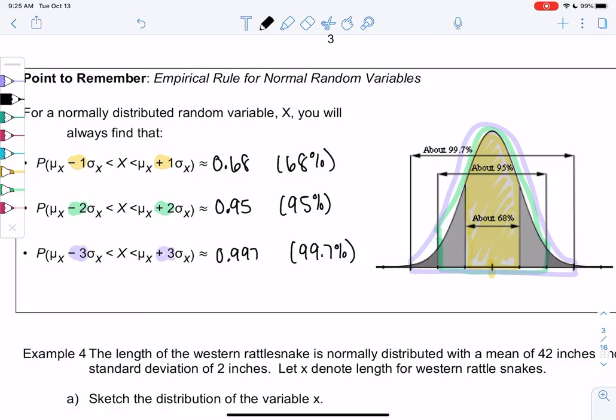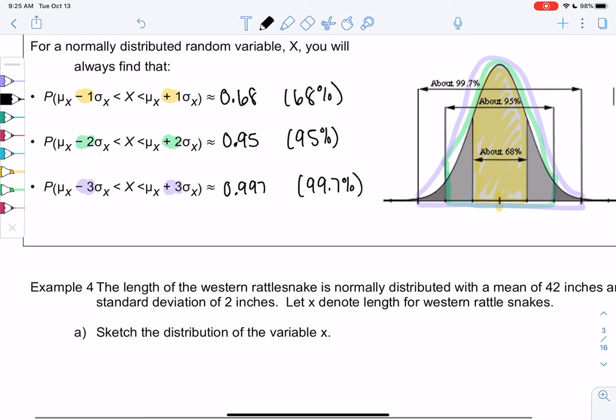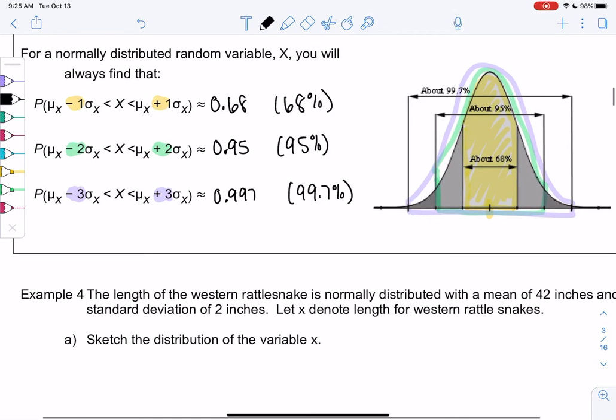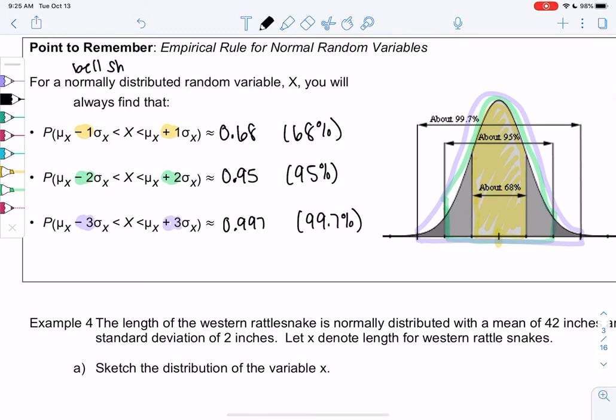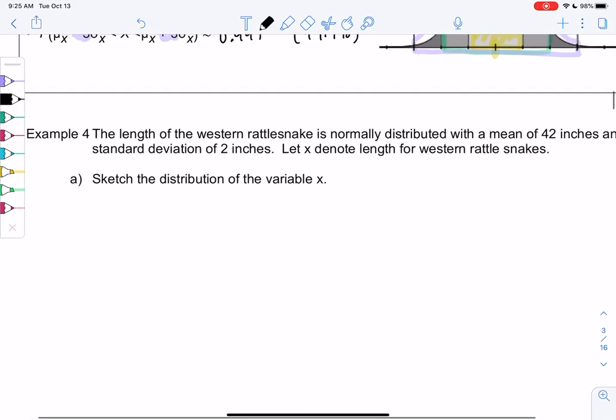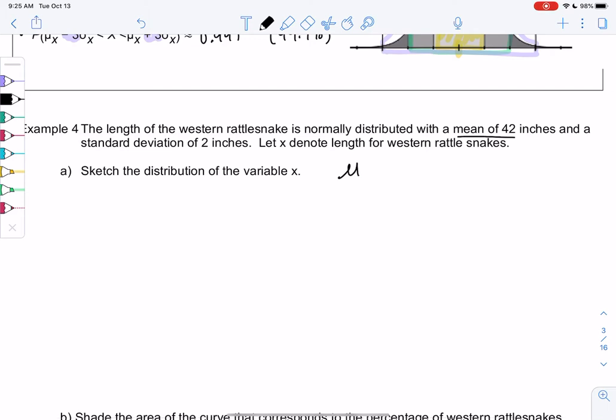So let's do one example with this, Example 4. And this was only true, I should emphasize, this was only true for bell-shaped or normally distributed. Remember the numbers were different for curves overall. So this is special for bell-shaped or normally distributed only. So Example 4. The length of western rattlesnakes is normally distributed with a mean of 42 inches. So mu is 42. And a standard deviation of 2 inches. And so x is my variable. x will be the length of western rattlesnakes.